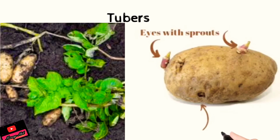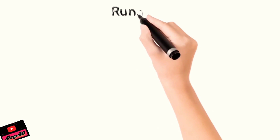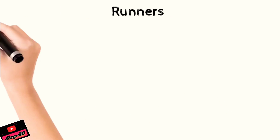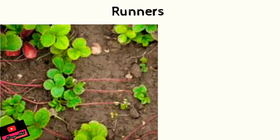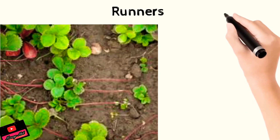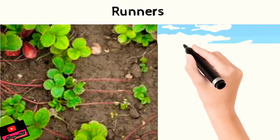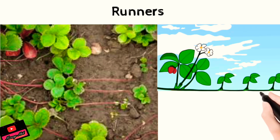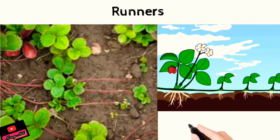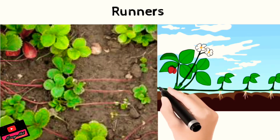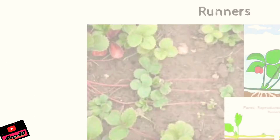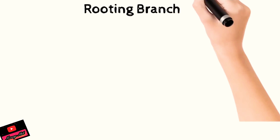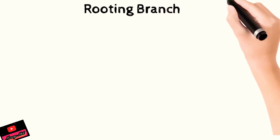These buds have depressions and are also called eyes. Runners is the second type of vegetative propagation, most commonly seen in strawberry. The stem is herbaceous and very soft; it grows along the ground and roots come out, and other parts also become a strawberry plant.